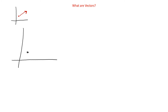If we had actual values, let's say we have the starting point at (1, 2) and the ending point over here at (6, 5), and we're going from here to here, we could find the component form of this vector.